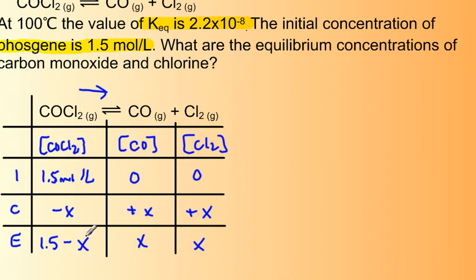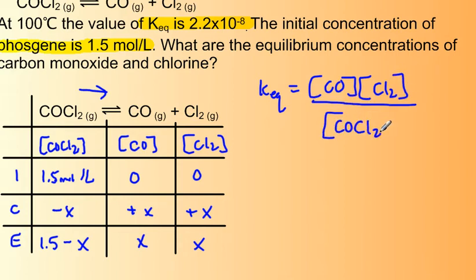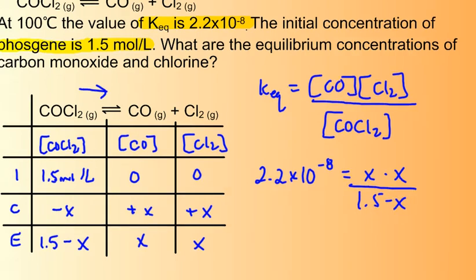And since we're not given any of the equilibrium concentrations, we need to use our KEQ expression to help us. So the equilibrium constant expression will be the concentration of CO times the concentration of Cl2 divided by the concentration of COCl2. We can substitute in the values from our equilibrium line in our ice table. And we can substitute in the value we've got for KEQ. So 2.2 times 10 to the minus 8 equals X times X divided by 1.5 minus X. So I can simplify that a little bit.